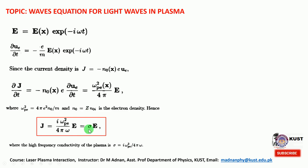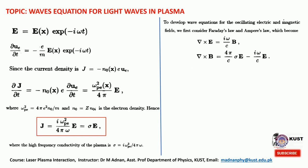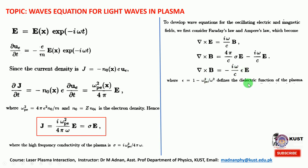To develop the wave equation for the oscillating electric and magnetic fields, we consider Faraday's law and Ampere's law. Faraday's law gives ∇ × E = −∂B/∂t, which can be expressed with −iω. Ampere's law gives ∇ × B = μ₀J + (1/c²)∂E/∂t. Taking E common from these two terms, we are left with iω/c times ε, where ε is the dielectric function of the plasma, defined as ε = 1 − ωp²/ω².